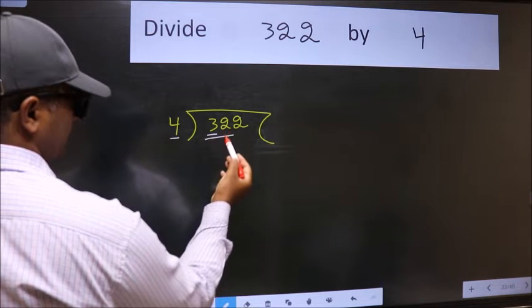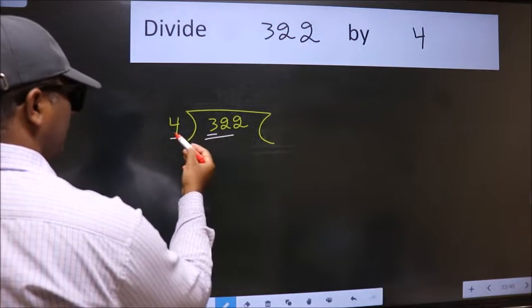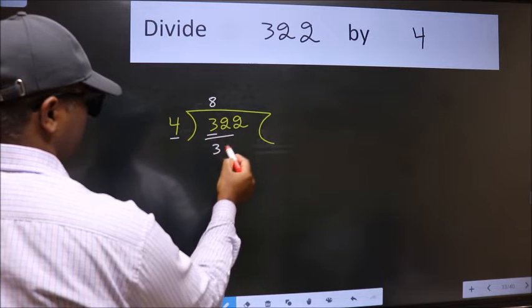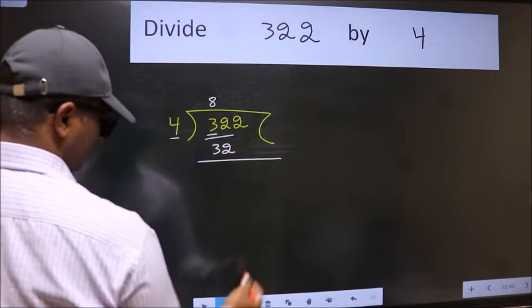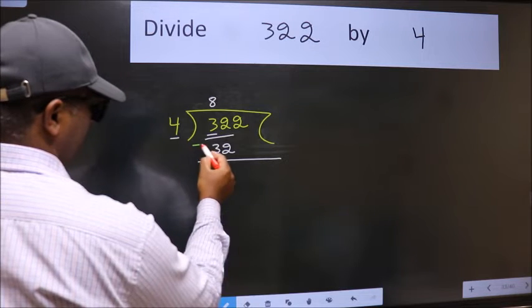So take 2 numbers, 32. When do we get 32 in the 4 table? 4 times 8 is 32. Now we subtract and get 0.